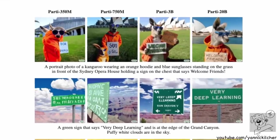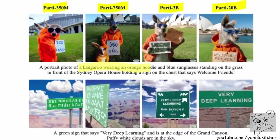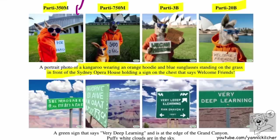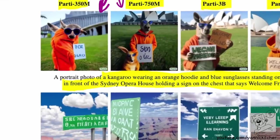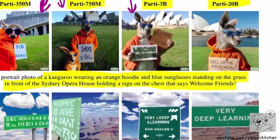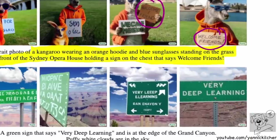Now the cool part: putting models side by side with the same prompt. 'A portrait photo of a kangaroo wearing an orange hoodie and blue sunglasses standing on the grass in front of the Sydney Opera House holding a sign on the chest that says welcome friends.' The small models produce DALL-E Mini style pictures. The 3B model is closer to DALL-E or DALL-E 2, still bad at spelling. But as soon as you go to the 20B model — 'welcome friends' — there it is. All you need is scale.